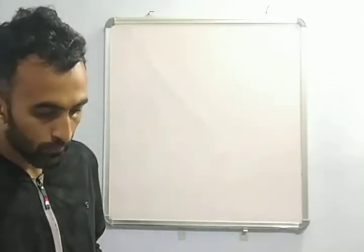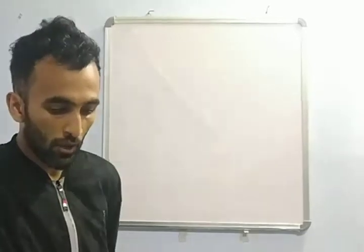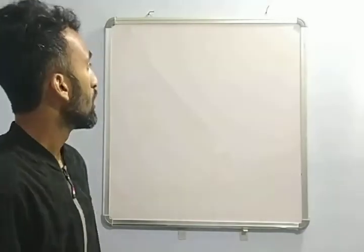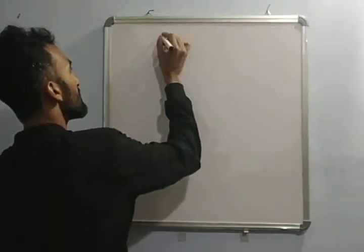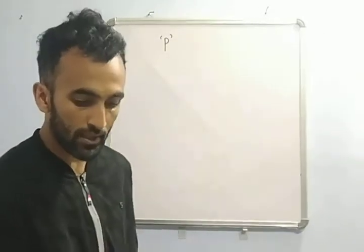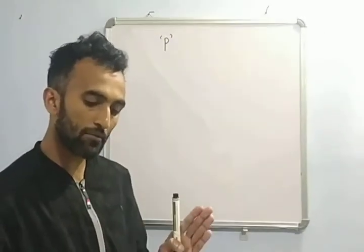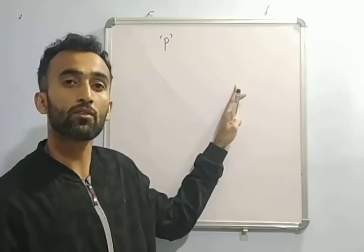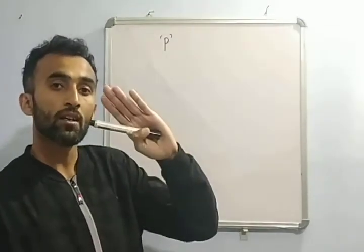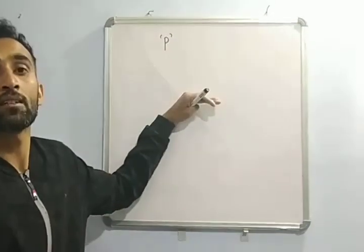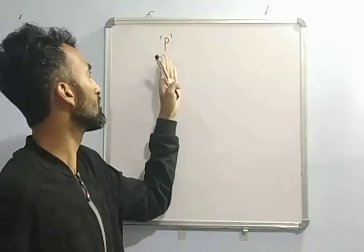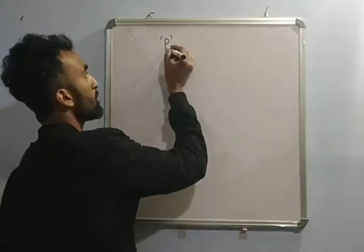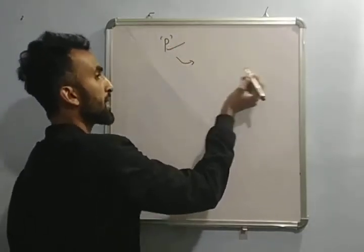Now we will solve question number 4. Find the value of P for which the given points are collinear. We have to find out the value of P for which they are collinear. The given points are collinear if area of triangle equals to 0. It is not that we are going to prove that the area of triangle equals to 0. Our question is: find out the value of P so that the area of triangle equals to 0.